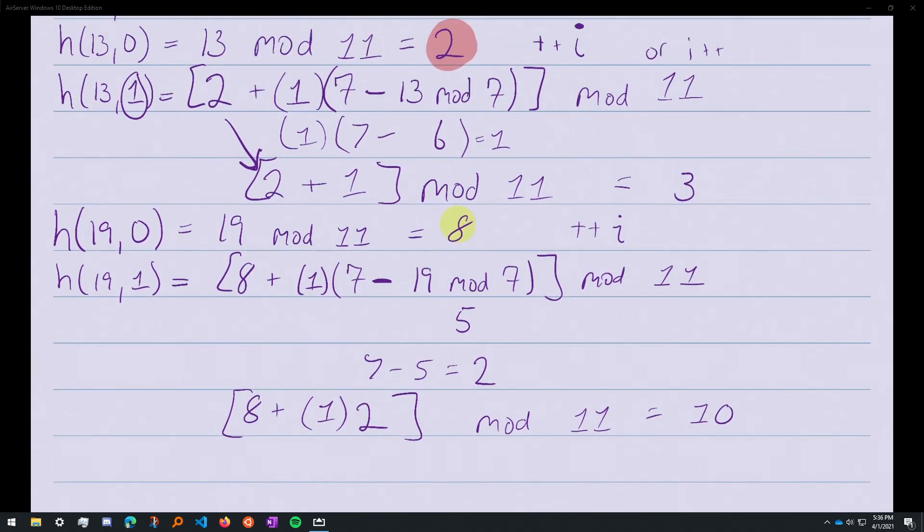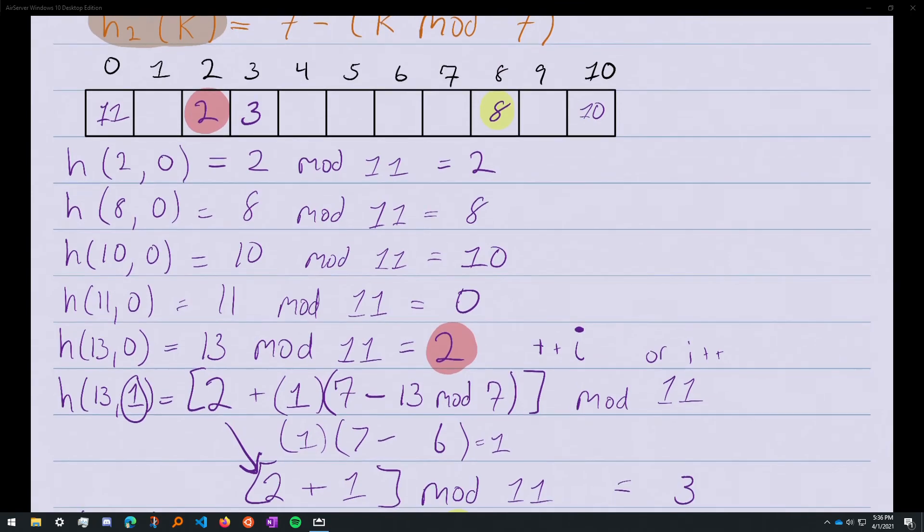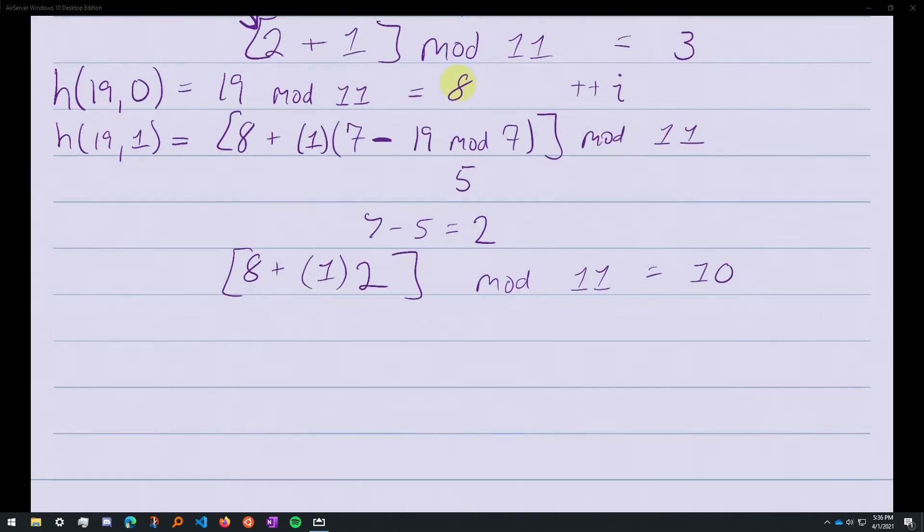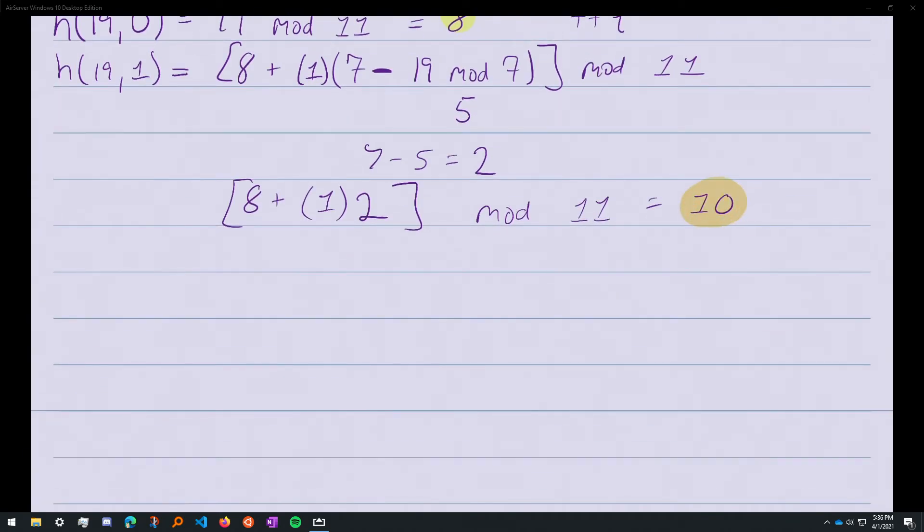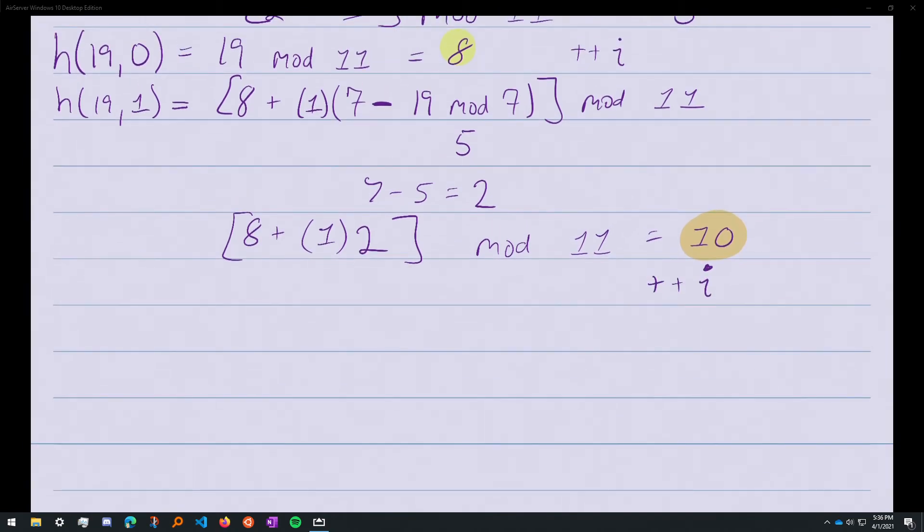So we can just go ahead and put it into 10, right? Oh wait, we have another collision here. The double hashing method takes care of this for us. It says if you have a collision, increment i. So we increment i and try again.